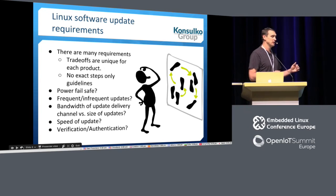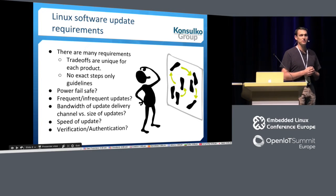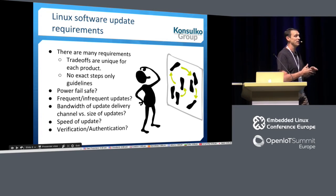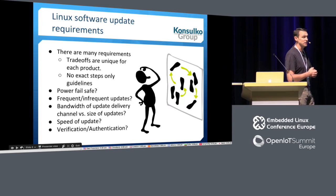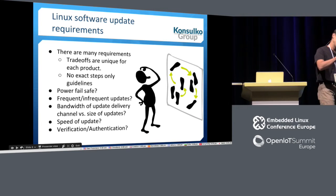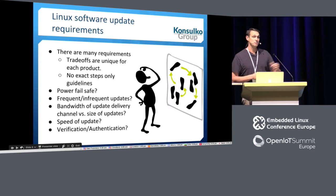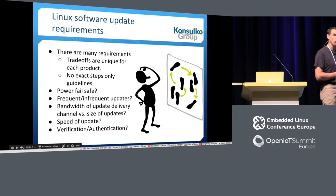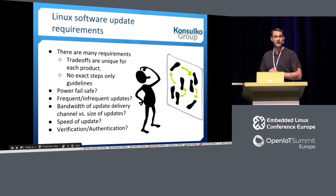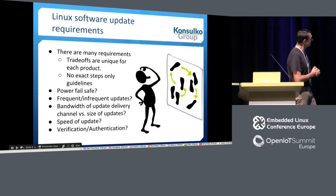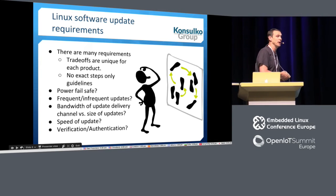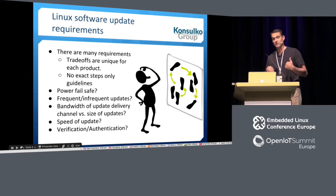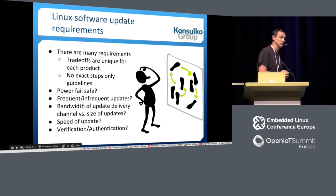Another consideration is speed of update and downtime. Depending on the scheme, how long is that downtime? Or is it something you can do in the background and quickly recycle, or do a partial update without any downtime? Also important is verification and authentication — crypto hashing to confirm what's coming through that channel is what your service provided and not some rogue payload.